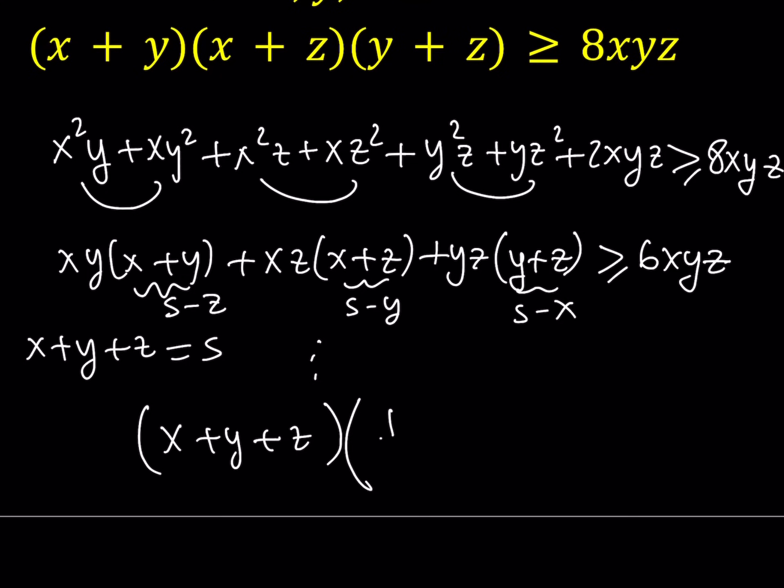And then by distributing and replacing s with x plus y plus z, this is going to lead you to an inequality that I proved a while ago. x plus y plus z multiplied by 1 over x plus 1 over y plus 1 over z is greater than or equal to 9. Obviously here x, y, z cannot be 0 but you can basically modify it to fit our problem.